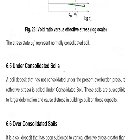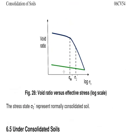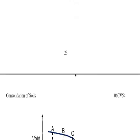In the normally consolidated stage, the initial overburden has already consolidated the soil to some extent, making construction acceptable even if some settlement occurs. Under-consolidated soil, however, is not recommended at all for construction. That covers the various types of soils based on stress states.